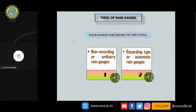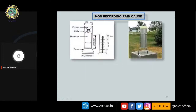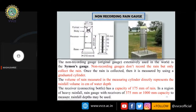Rain gauges are classified into two types: non-recording (ordinary) and recording (automatic). The most common non-recording type is Simon's gauge. It only collects rainfall — one must manually pour the collected water into a measuring jar to record it. The receiver or collecting bottle has a capacity of 175 mm of rain for light or moderate rainfall regions.